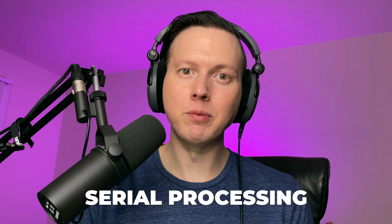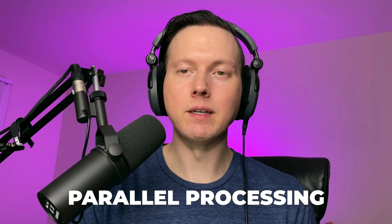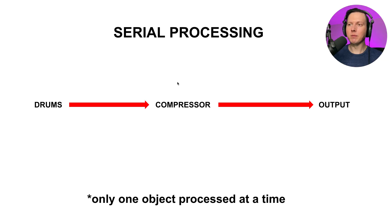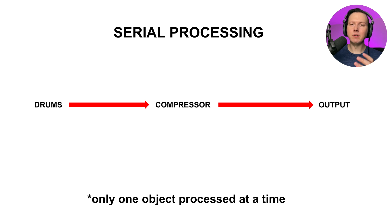When we talk about processing there are two types that we need to know: serial processing and parallel processing. Looking at this diagram, we have drums going into a compressor and then that is going to our output. This is serial processing, where you have only one object processed at a time — for example, drums going into a compressor on that drum track.